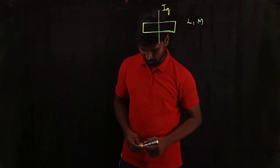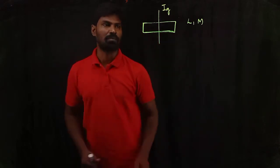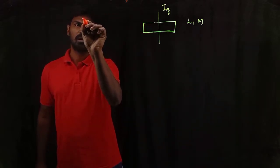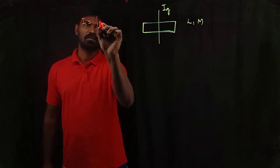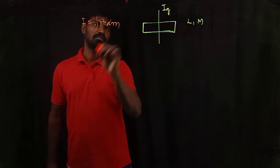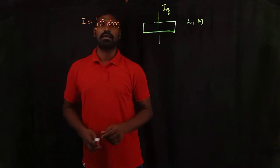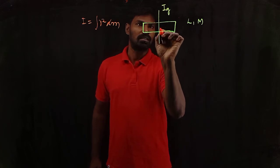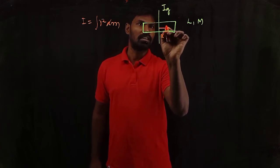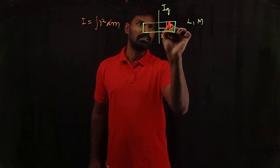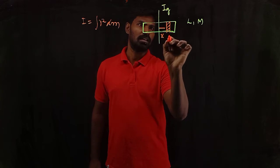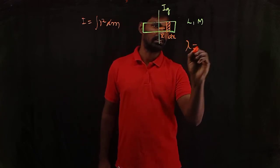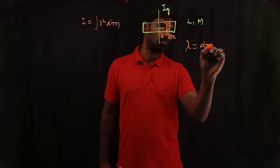I want to calculate the moment of inertia of this system with respect to this axis. For a continuous mass distribution, the expression is: I is equal to the integral of r² dm, where dm is the mass element under consideration. With respect to this axis, at a distance x, consider a small strip of thickness dx. I'm going to define a parameter lambda, which is known as linear density, that is dm divided by dx.